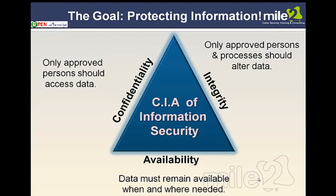Integrity gets into: can they manipulate the data? Unauthorized people. Of course we want the authorized people to be able to manipulate the data and make changes, because they are authorized to do so. But only the approved persons and processes should be able to make these changes. In the cryptography chapter, hashing — as in MD5 or SHA-1 — is done on data to verify integrity. It does not stop information from being manipulated by an unapproved person, but it lets us know it has occurred so we know not to trust that data.